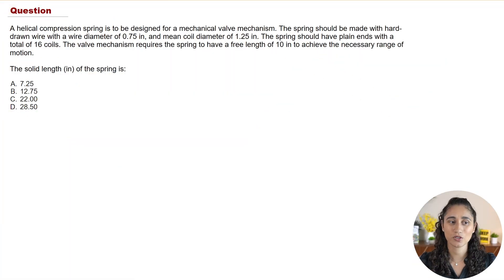A helical compression spring is to be designed for a mechanical valve mechanism. The spring should be made with hard drawn wire with a wire diameter of 0.75 inches and mean coil diameter of 1.25 inches. The spring should have plain ends with a total of 16 coils. The valve mechanism requires the spring to have a free length of 10 inches to achieve the necessary range of motion, and we want to determine the solid length of the spring.